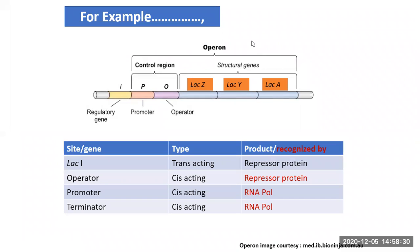Let us understand this with the lac operon example. There is a regulatory gene called lac I, a control region with a promoter and an operator, and structural genes lac Z, lac Y, and lac A. This operon is an inducible operon — it gets expressed when lactose is present and switched off when lactose is absent.